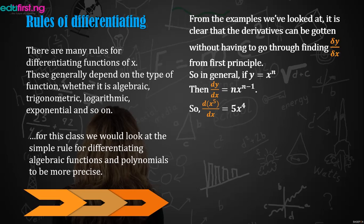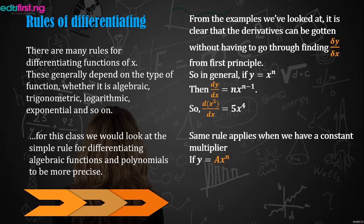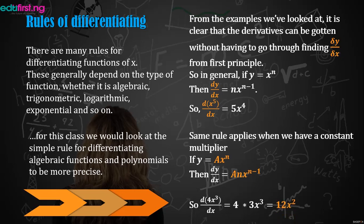For example, differentiating x raised to the power of 5 with respect to x gives 5x raised to the power of 4. The same rule applies when there is a constant multiplier: if y equals ax raised to the power of n, then dy/dx becomes a·n·x raised to the power of n minus 1 — you multiply n times a and subtract 1 from the power. So differentiating 4x cubed gives 4 times 3, which is 12x squared.